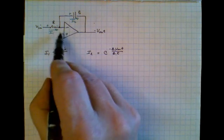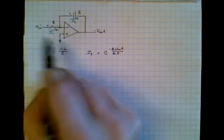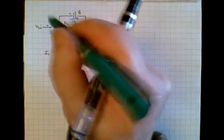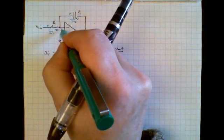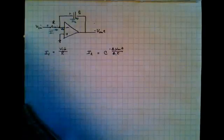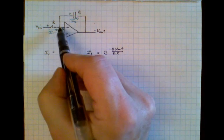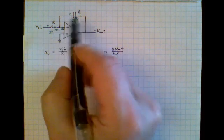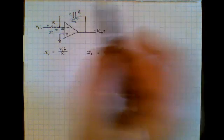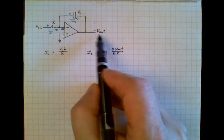Now remember that this over here is a ground. And so therefore the inverting input over here is a virtual ground. And that means that the voltage at this end of the capacitor is really zero. So the voltage across the capacitor is minus Vout.